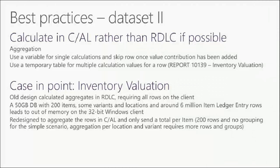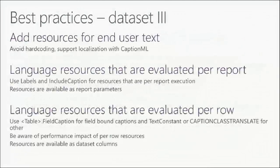That makes for a much better reporting scenario. The story behind it: a 50 GB database with 200 items with variants and locations had about six million item ledger entry rows, which basically led to out-of-memory errors on a 32-bit client. By changing it and doing the summation within NAV, we were able to finish the report within a much smaller window of time and actually complete the report.